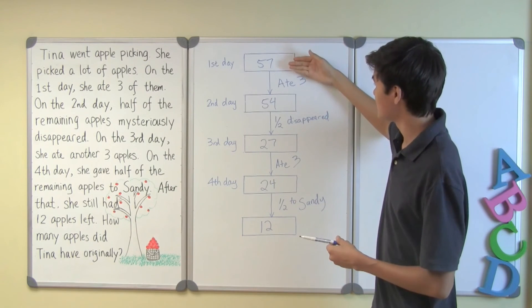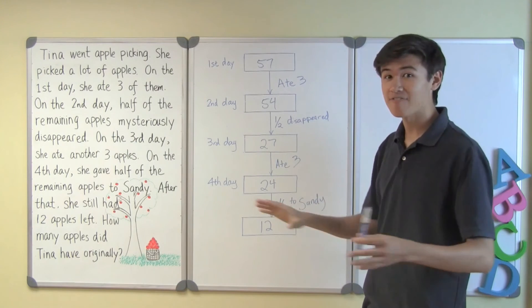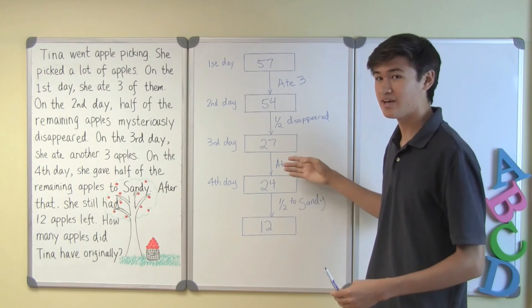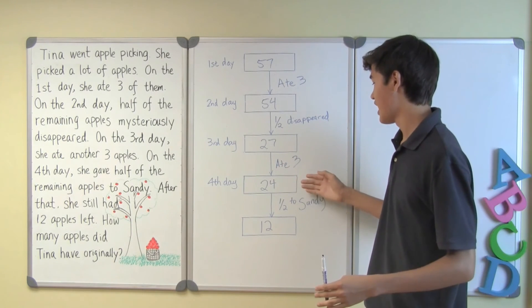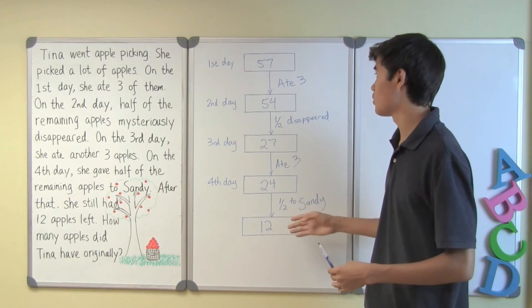You can see, 57 eats three, 54. 54, half disappears, 27. 27, she eats another three, there'll be 24 left. In 24, half she gives to Sandy, she only has 12 left. This flow chart really seems to work.